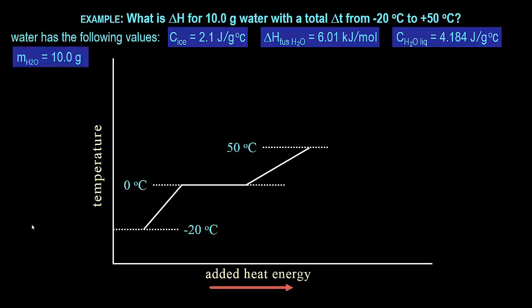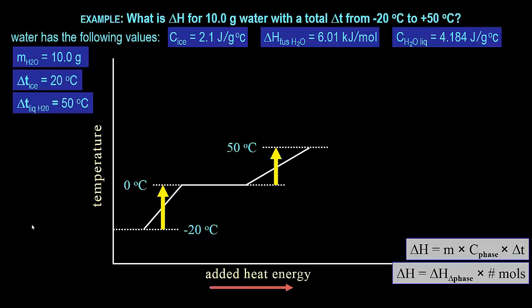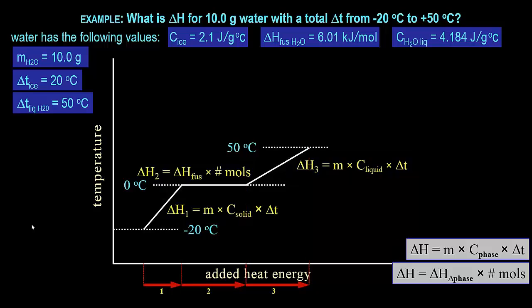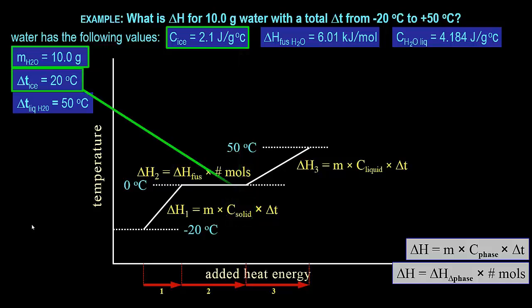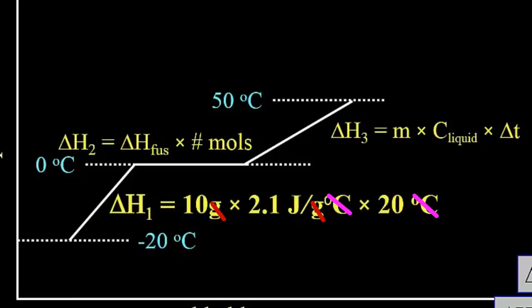The problem gives the mass of water, and the first delta T is 20°C and the second delta T is 50°C. There are three enthalpy changes. The first enthalpy change is the mass — 10 grams — times the specific heat of ice, 2.1 joules per gram degree Celsius, times the temperature change, 20 degrees Celsius. You can see that grams and Celsius cancel, leaving joules, the correct unit for heat energy and for enthalpy.